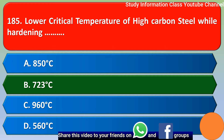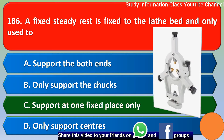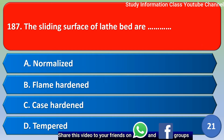Next question: a fixed steady rest is fixed to the lathe bed and is only used to — option A support both ends, option B only support the chuck, option C support at one fixed place only. Option C is the correct answer.